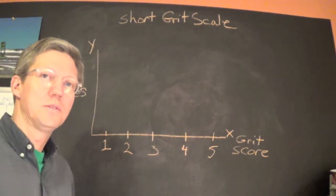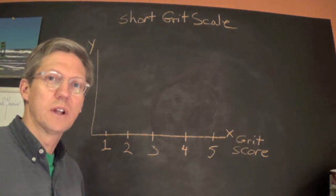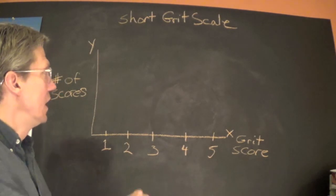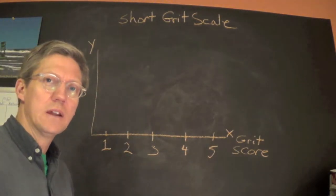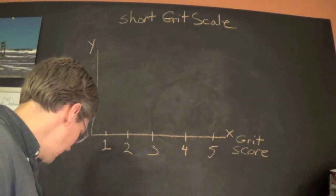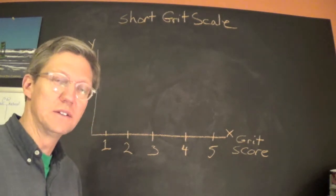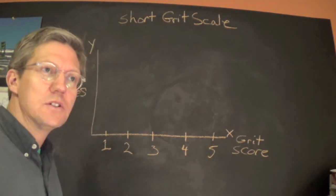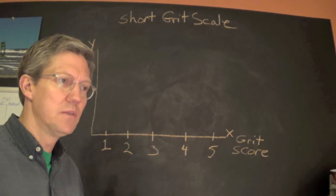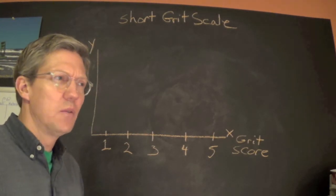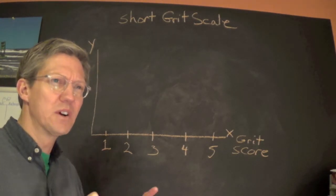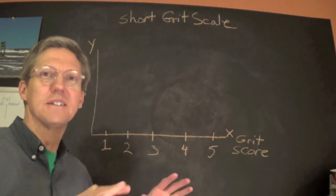This is for the Counseling 640 assessment class. What we want to look at is normal distribution, and to do that I want to look at using the Short Grit Scale, which was developed by Angela Duckworth and colleagues. To give a sense of how this will work, let's assume that we have given this to a large sample and that we have taken measures to try to make sure that we have similar ethnicities as to the latest census population.